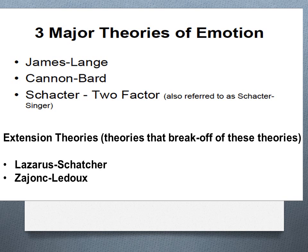There are three main theories you need to know: James-Lange, Cannon-Bard, and Schachter-Singer — also known as the Two-Factor Theory. Later we'll look at extension theories: the Lazarus/Schachter-Singer theory and the Zajonc/LeDoux theory.